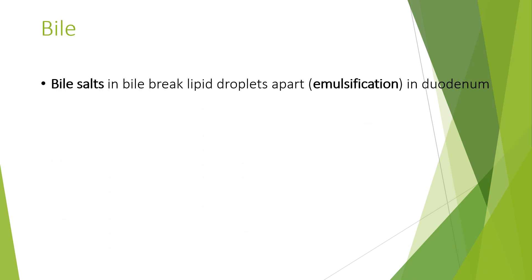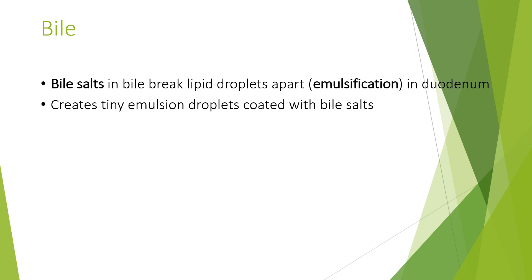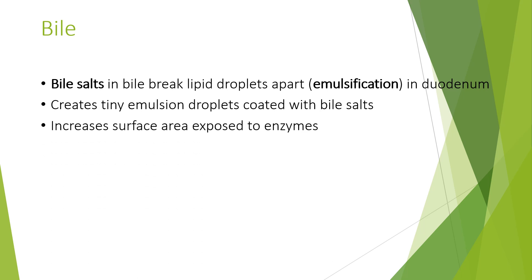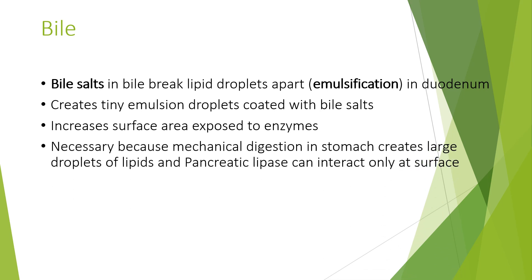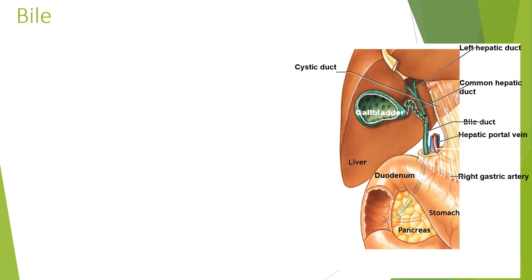Moving on to bile — bile salts in bile break lipid droplets apart in a process known as emulsification, which occurs in the duodenum. This creates tiny emulsion droplets coated with bile salts, increasing the surface area exposed to enzymes. This is required because mechanical digestion in the stomach creates large droplets of lipids, and pancreatic lipase can only interact at the surface.